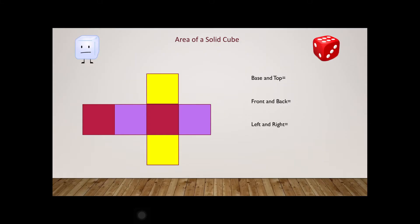If we say this length is L, since it's a square all the lengths are equal. The area of a square is L². This area will be the same for every face — L² for every face. So the base and top combined make 2L², the front and back combined make 2L², and the left and right combined make 2L². That makes a total of 2 + 2 + 2 = 6L². So the total surface area of a solid cube is equal to 6L².